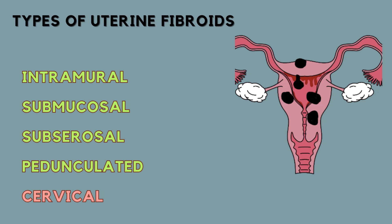The first type is the intramural fibroid, which is embedded inside the muscle of the uterus — the uterine myometrium — and is the most common type. These fibroids grow and project either inside or outside the uterine cavity depending upon their growth direction, and they receive different names accordingly.